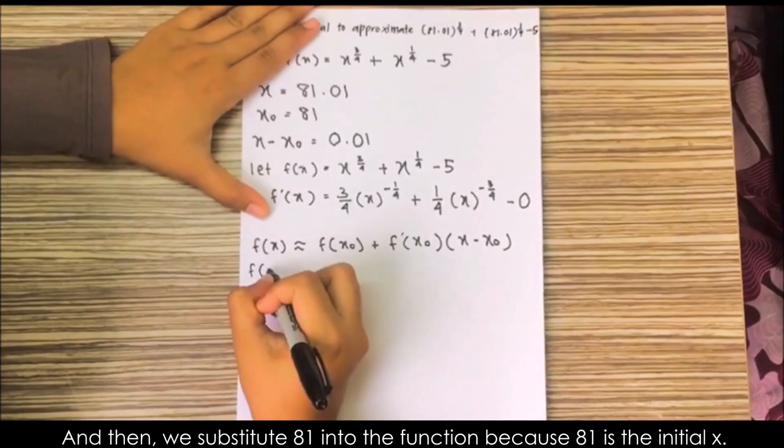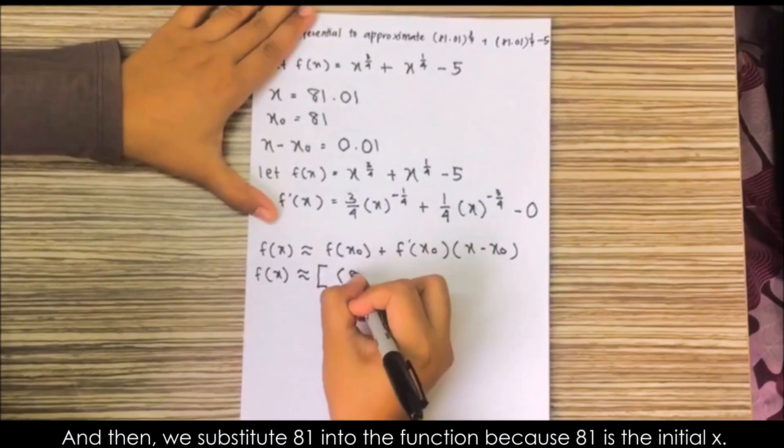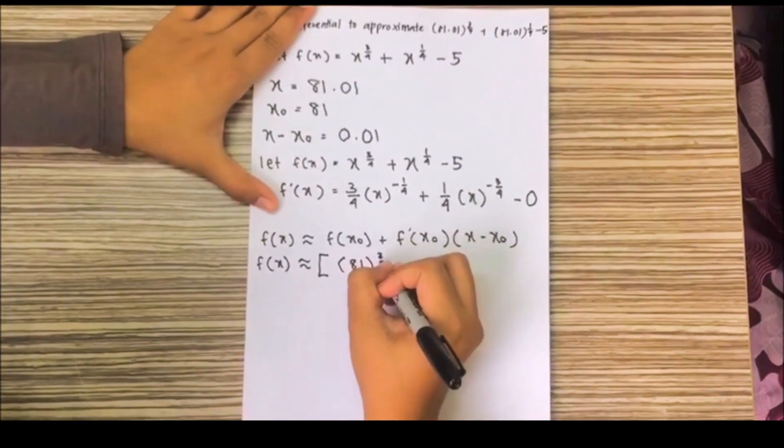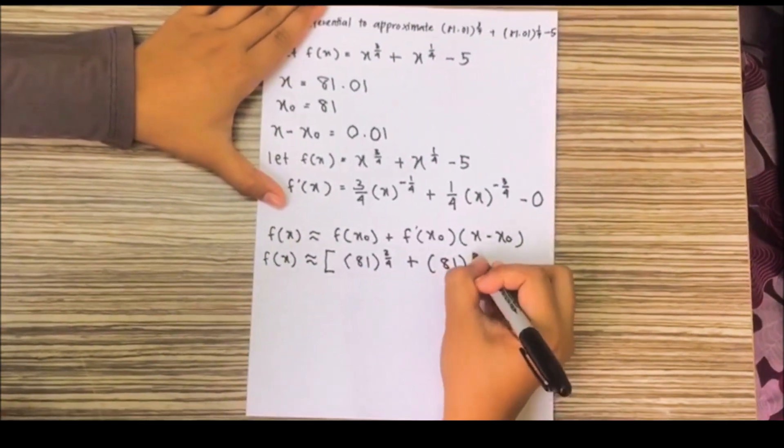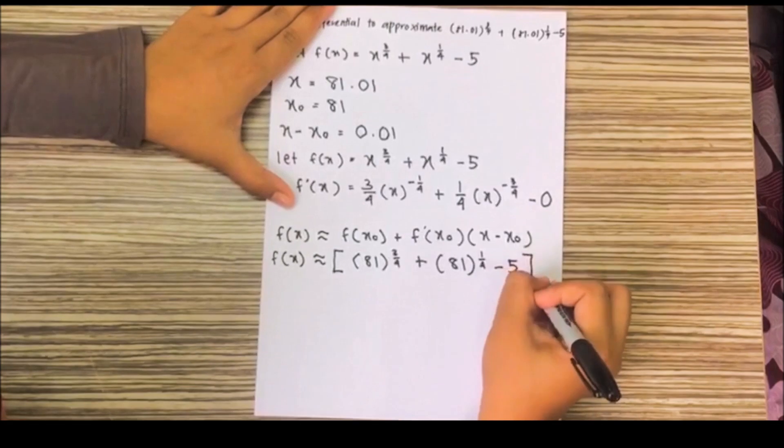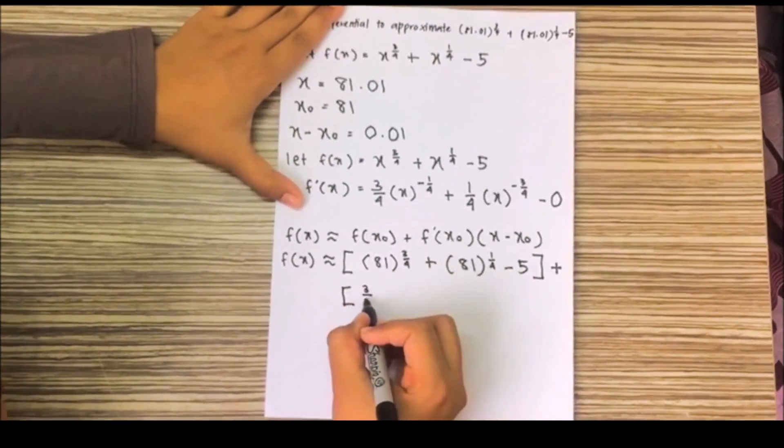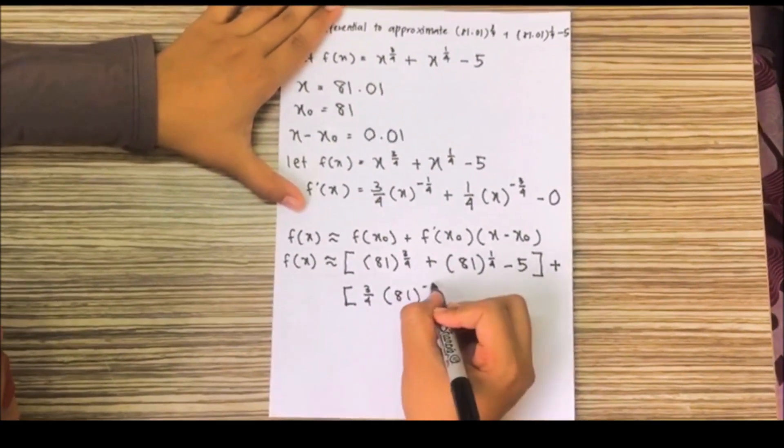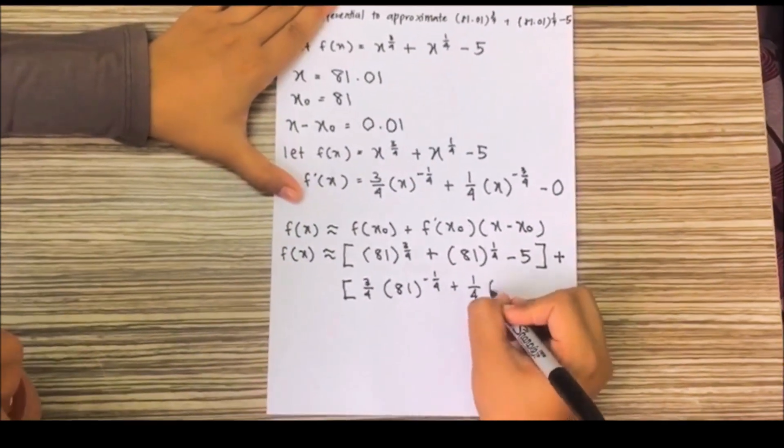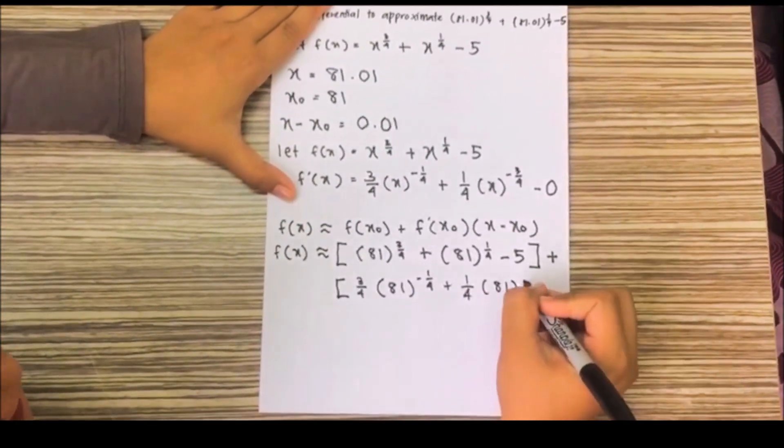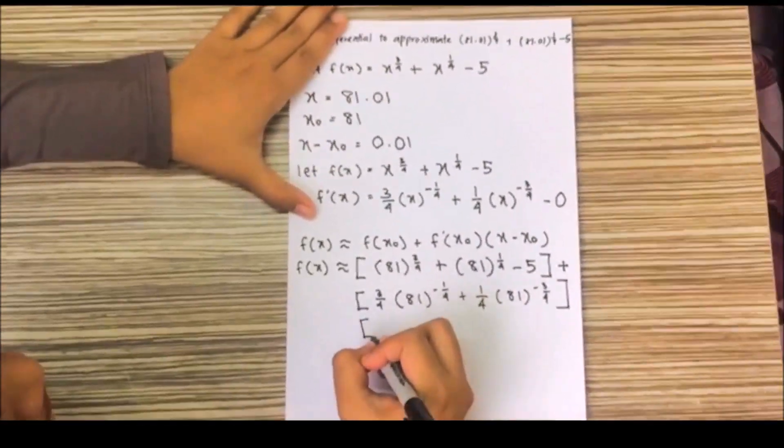And then, we substitute 81 into the function because 81 is the initial x.